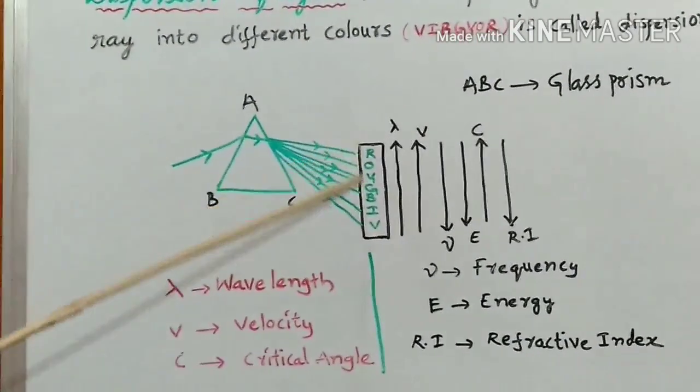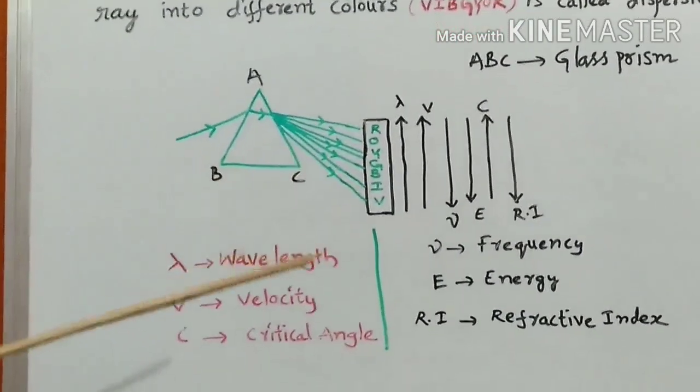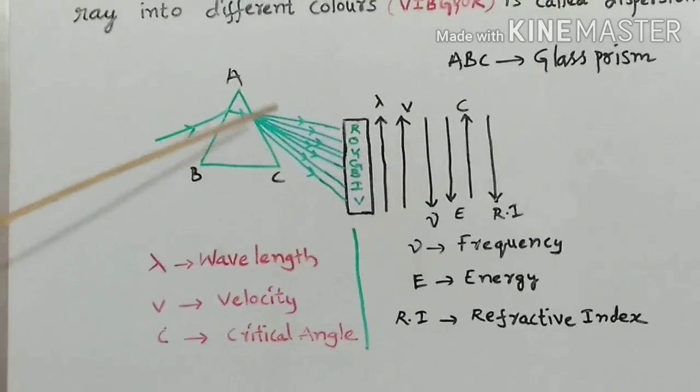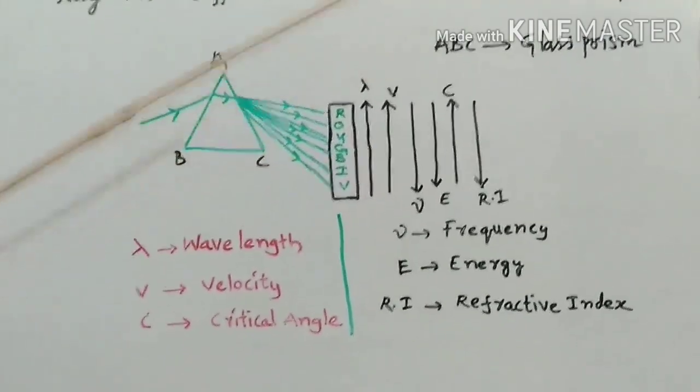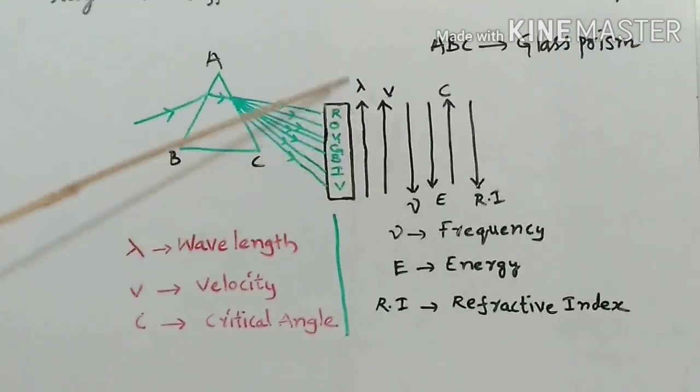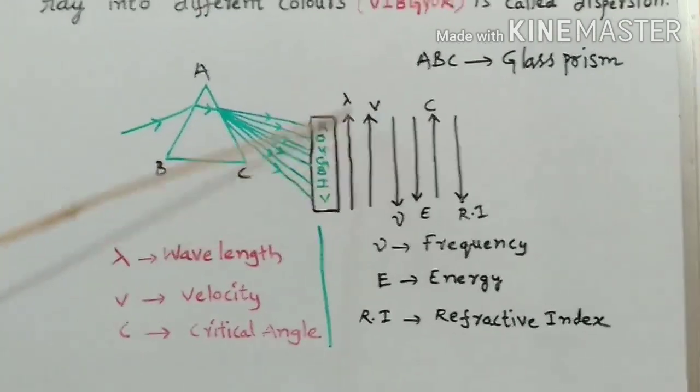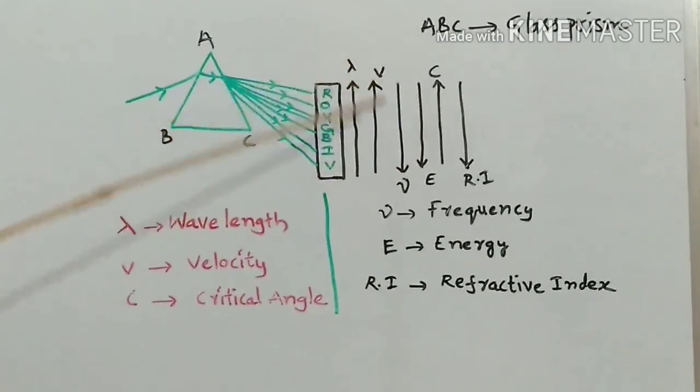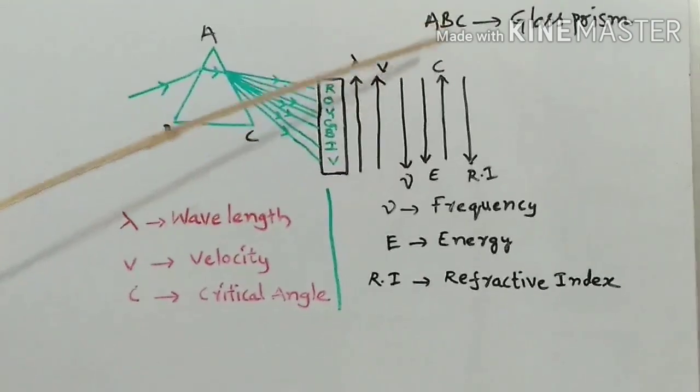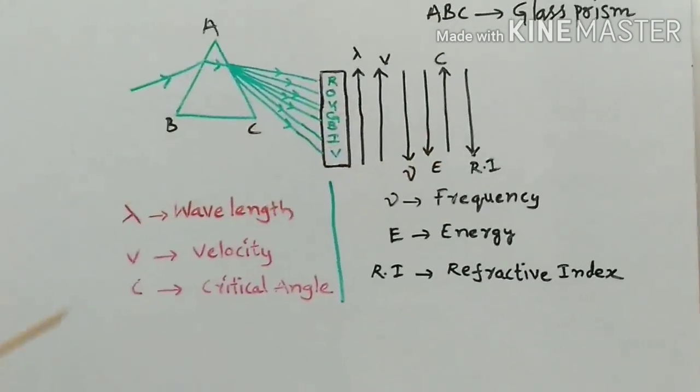Here, we can understand these VIBGYOR properties. Upward arrow mark shows increasing order, and downward arrow mark shows the property decreasing order.